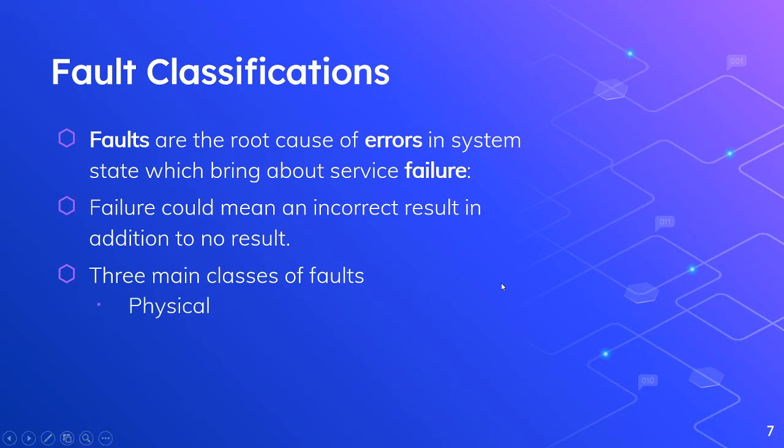The first would be a physical fault — these are things that just happen over time. Physical meaning hardware faults, either due to natural phenomena or human actions. So either there's a power outage in the data center, or there's some physical damage to the machine running the service. These would be our physical faults.